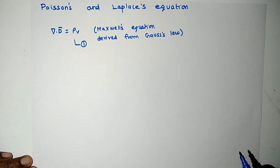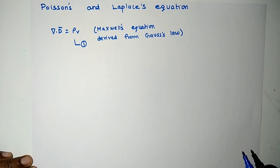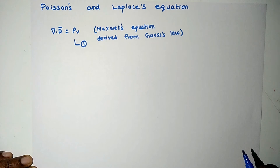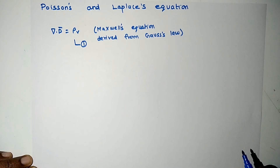Hello viewers, in this lecture video we are going to derive Poisson's and Laplace equation from Gauss's law. Equation 1 shown here is Maxwell's equation derived from Gauss's law. We can use this equation to find out Poisson's and Laplace equation.